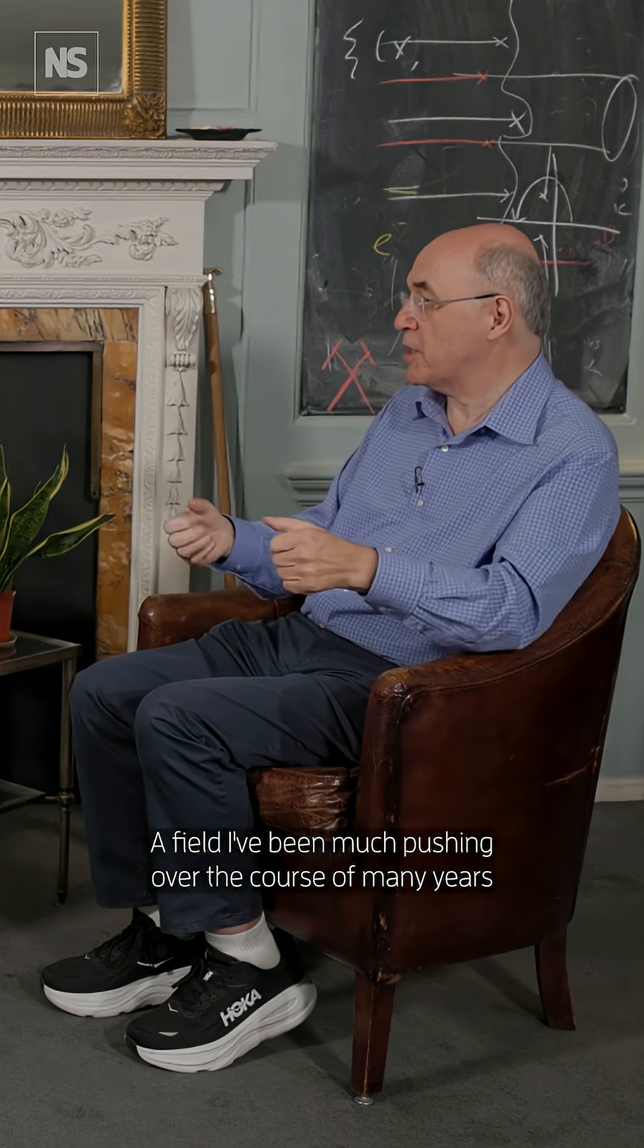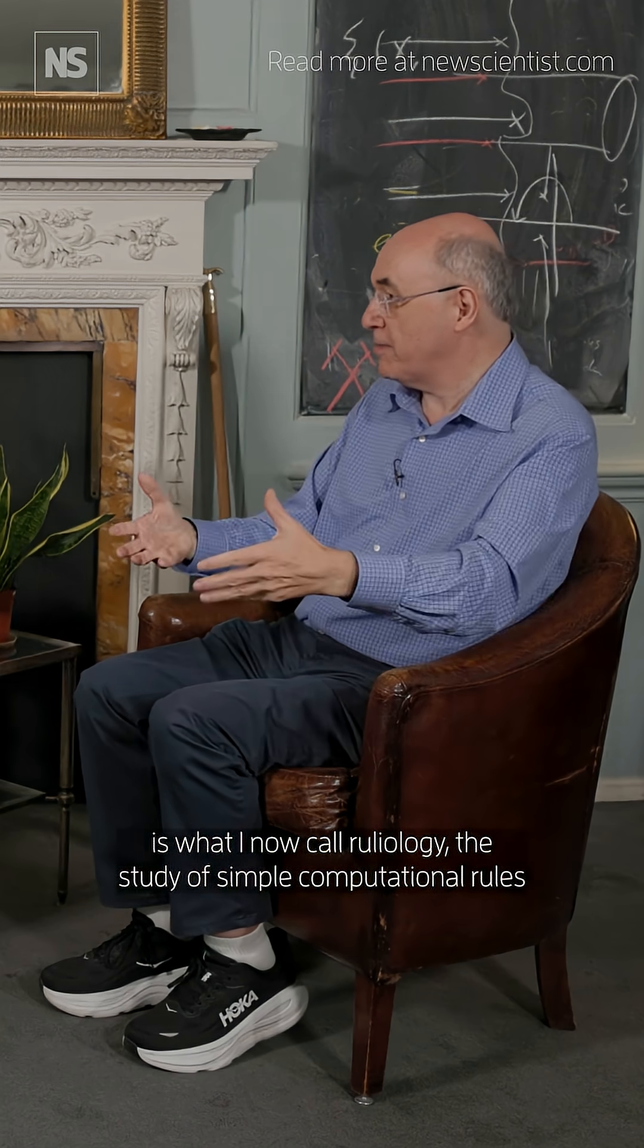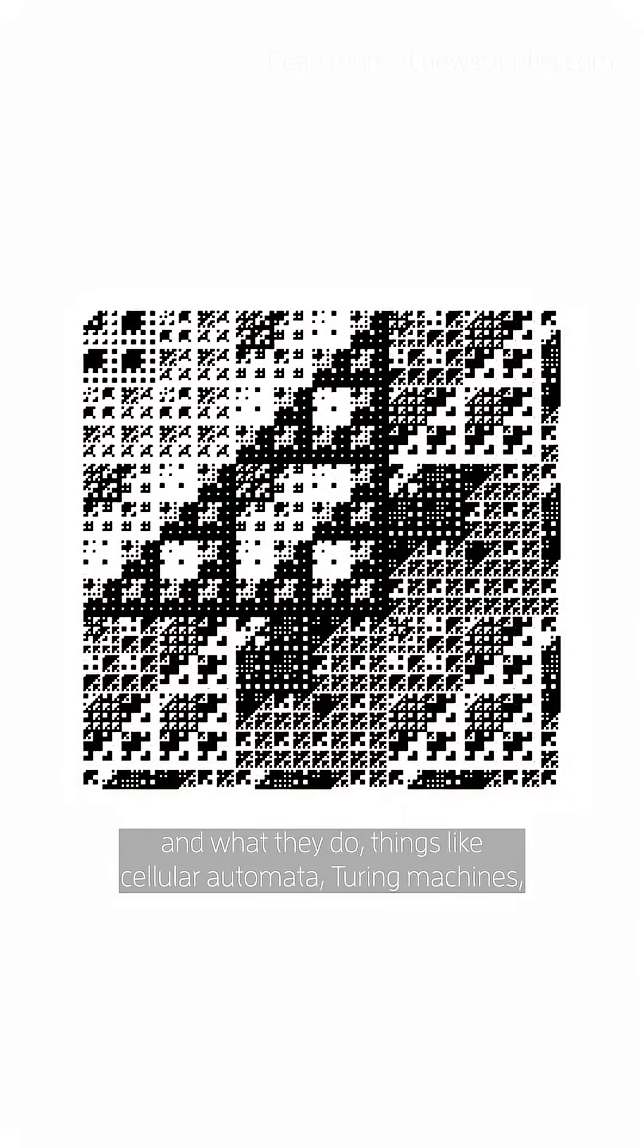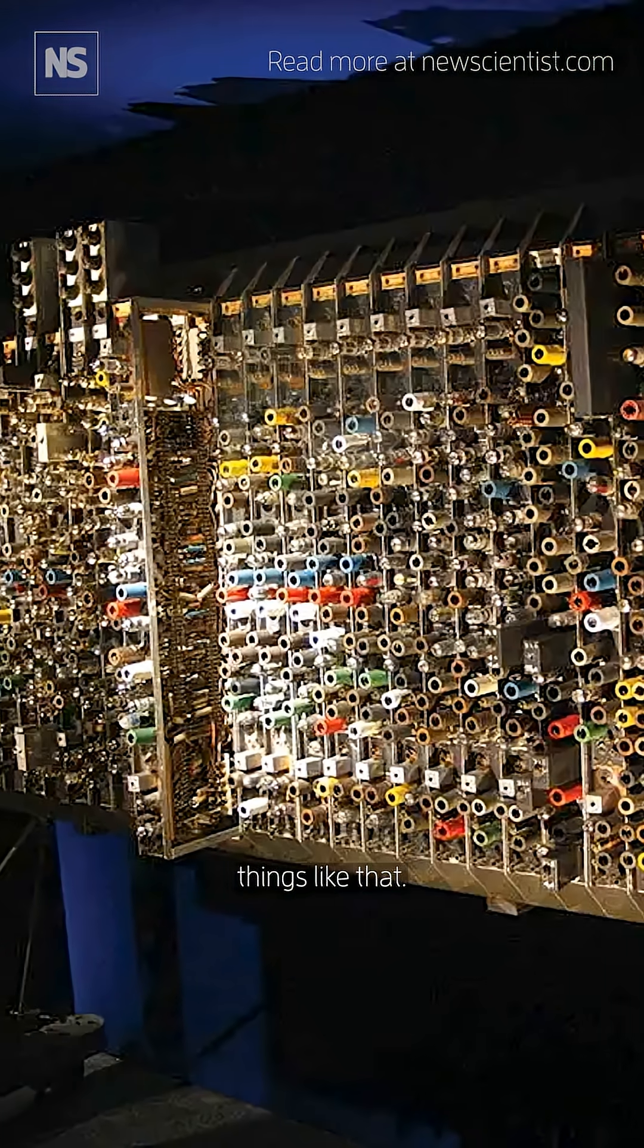A field I've been pushing over the course of many years is what I now call ruleology, the study of simple computational rules and what they do—things like cellular automata, Turing machines, things like that.